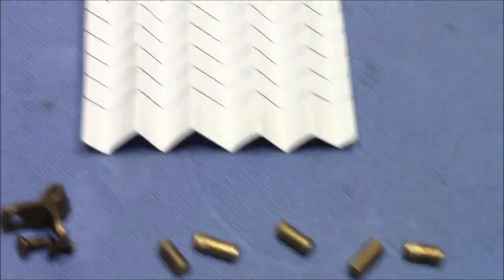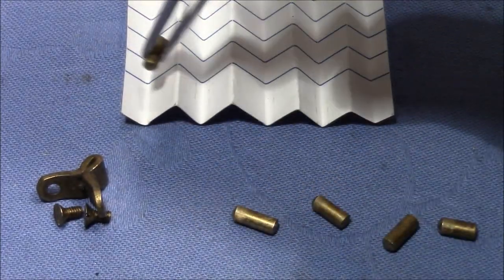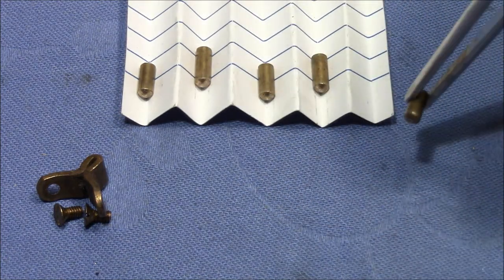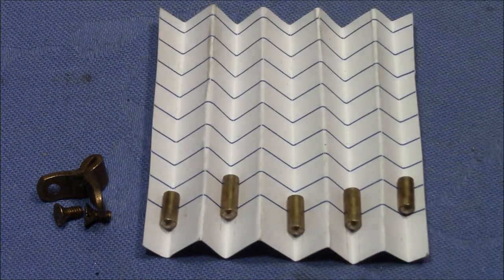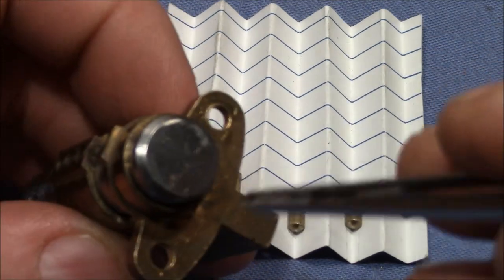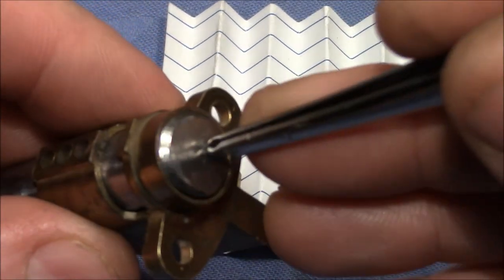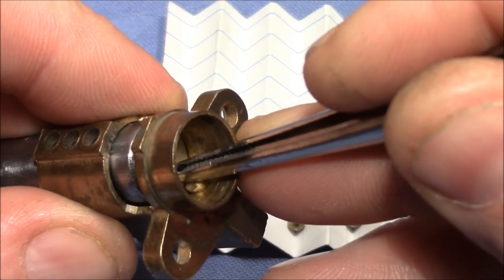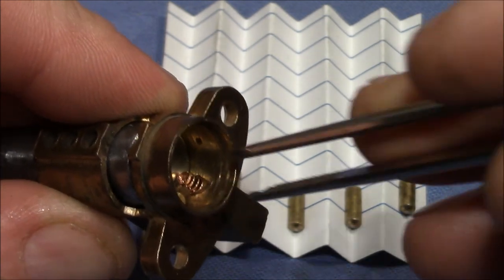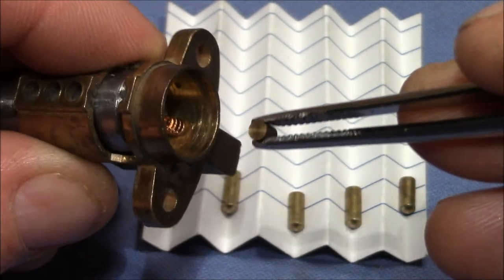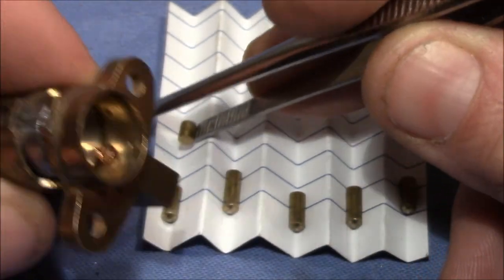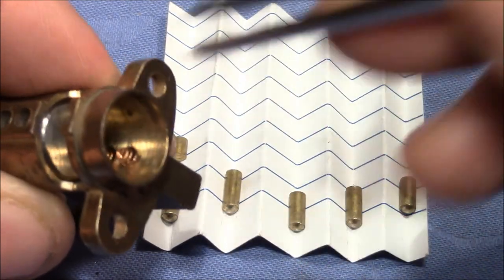I have a piece of paper here that I will use as a pinning tray because all my pinning trays are occupied with the other locks. So we have the key pins here. Now let's get out the drivers. You can see how much space we have until the first driver comes. It's more than an average lock.